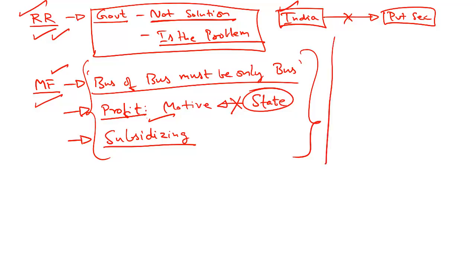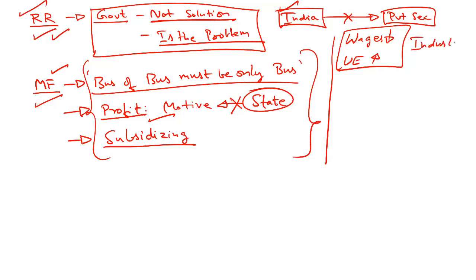The author also refers to global economic conditions: wages are going down across the world, unemployment rates are increasing, and there is the looming threat of the fourth stage of the industrial revolution — Industry 4.0 — which is powered by automation and artificial intelligence and is expected to drive further unemployment and reduction in wages.